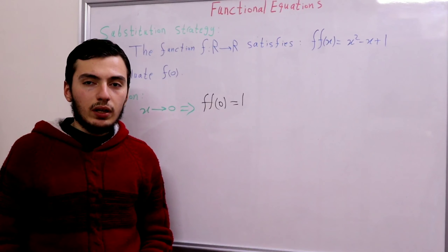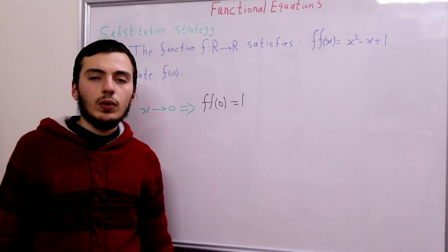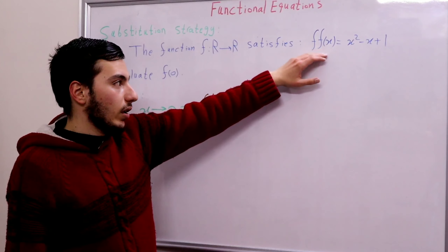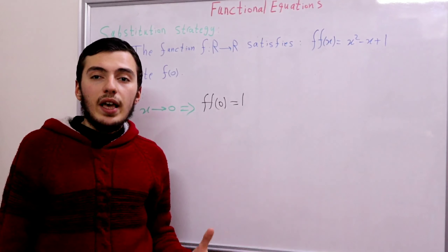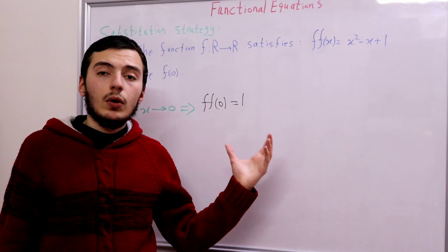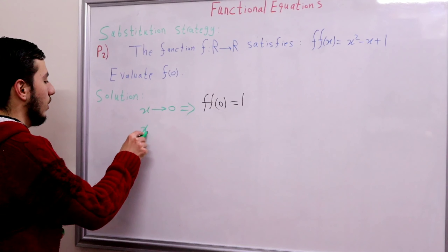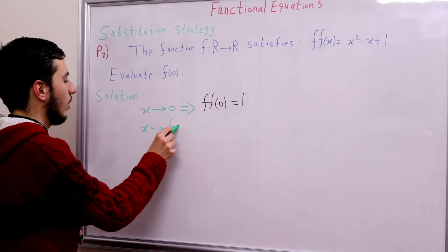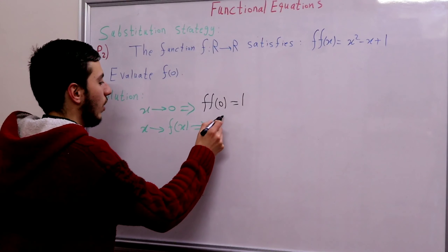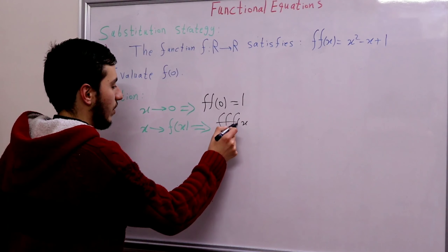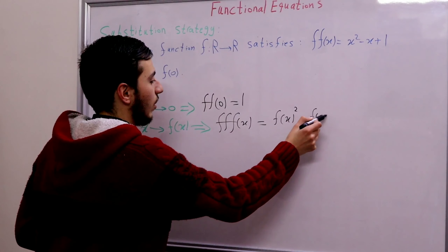Well here we have a little trick. We all know the saying: don't wait for chances to happen, make them yourself. That's exactly what we're going to be doing. Instead of plugging in small numbers, let's try plugging in f itself — substituting x with f(x) — and see what will happen. Now we have f(f(f(x))) = f(x)² - f(x) + 1.